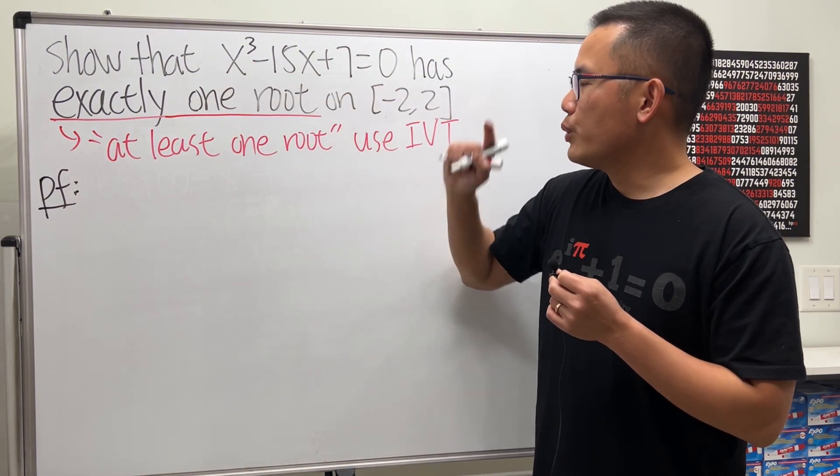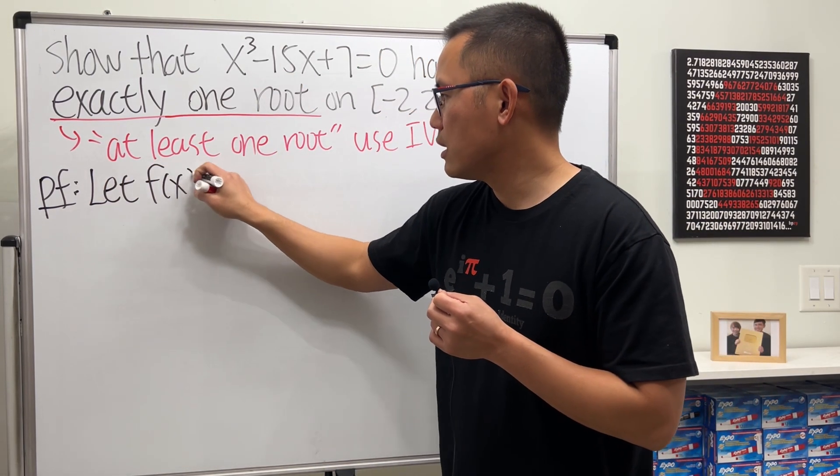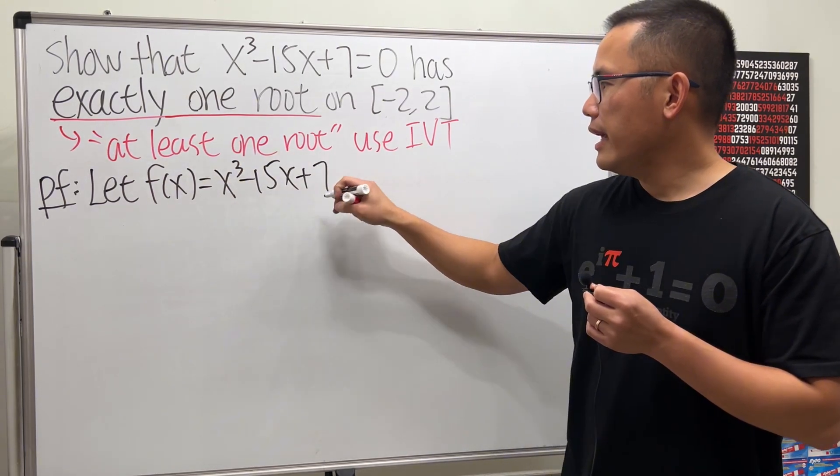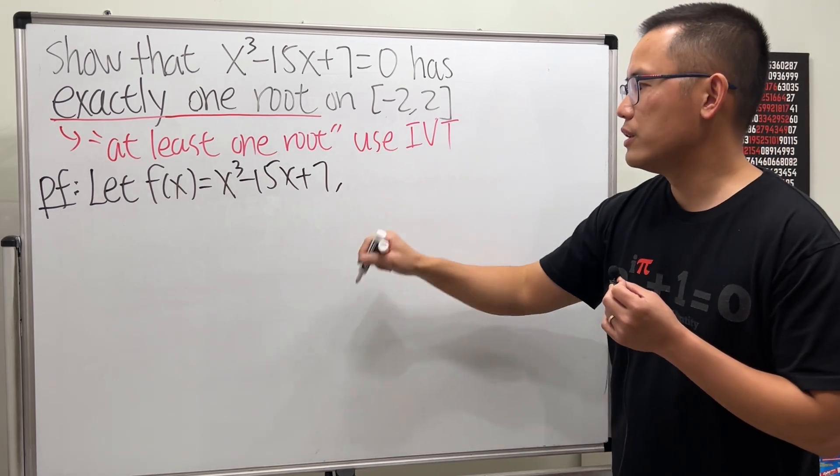This equation is equal to zero already, so I'm just going to call the left hand side our function. In order for us to use the IVT we will have to mention that this function is continuous.